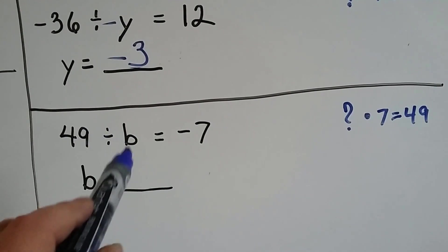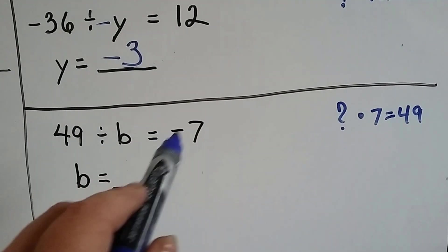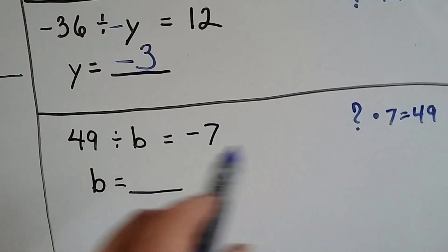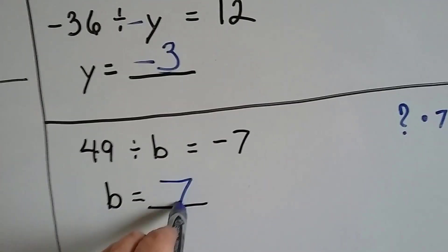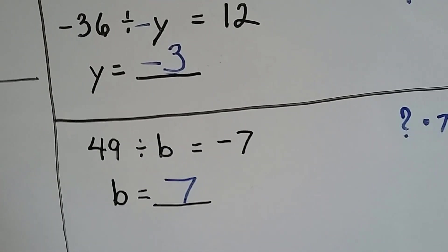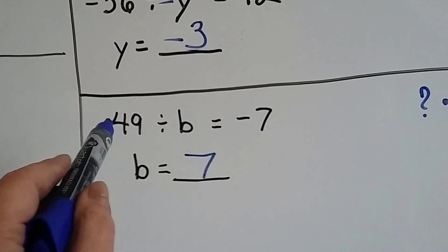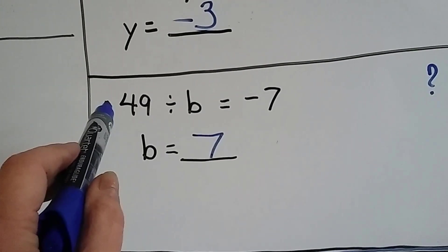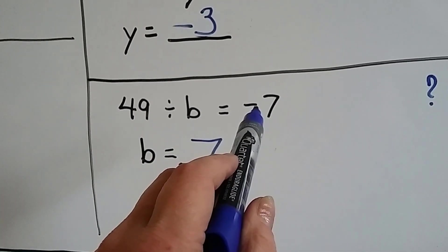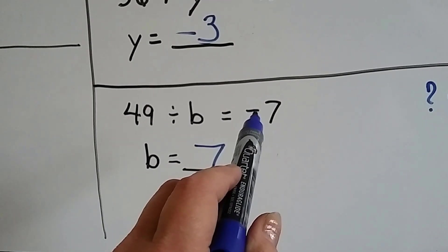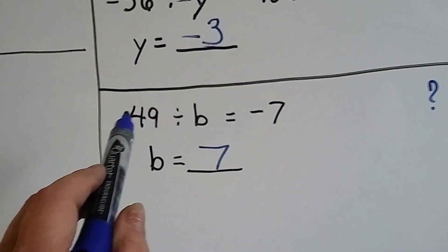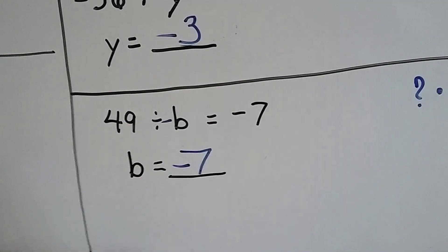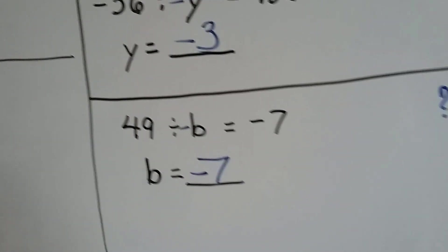Now we've got 49 divided by b equals negative 7. We ask ourselves, what times 7 equals 49? 7 times 7 equals 49. Is it negative or positive? We've got a positive 49 but a negative answer. The only way to get a negative answer is with unlike signs. So if 49 is positive, b is going to have to be negative — the answer is negative 7.